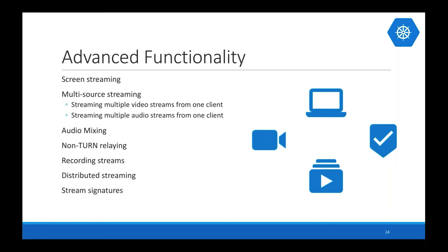Other advanced features include audio mixing like we talked about with the mixing model, non-TURN relaying using a processing server for one-way broadcasts where you relay one stream to many people without maintaining multiple connections, and stream signatures for security so that only your client can validate against streams being received and sent.